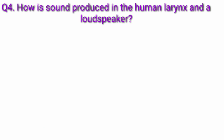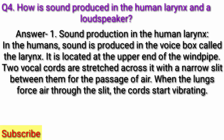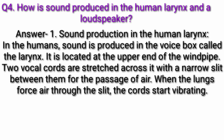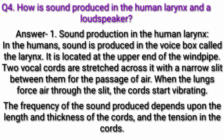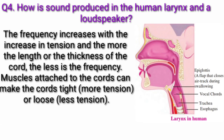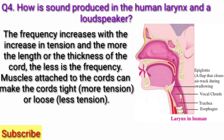Question 4: How is sound produced in the human larynx and a loudspeaker? Answer — Sound production in the human larynx: In humans, sound is produced in the voice box called the larynx. It is located at the upper end of the windpipe. Two vocal cords are stretched across it with a narrow slit between them for the passage of air. When the lungs force air through the slit, the cords start vibrating. The frequency of the sound produced depends upon the length and thickness of the cords and the tension in the cords. The frequency increases with increase in tension, and the more the length or thickness of the cord, the less is the frequency. Muscles attached to the cords can make the cords tight or loose.